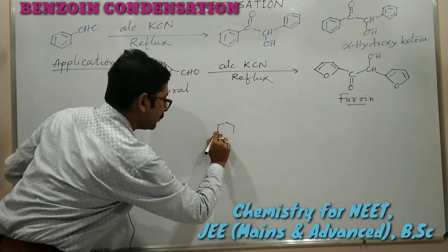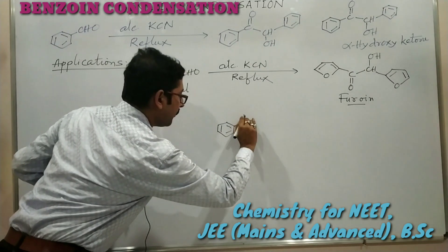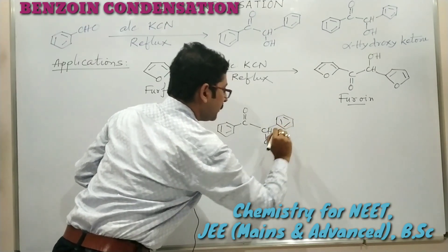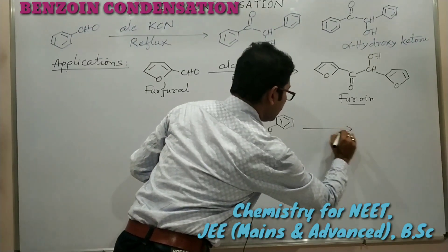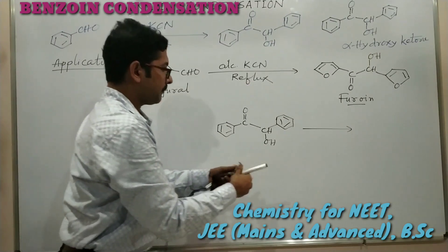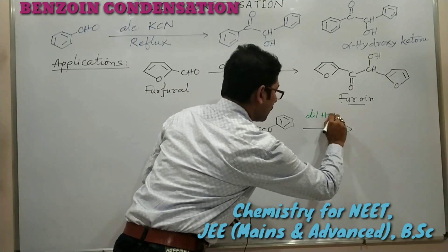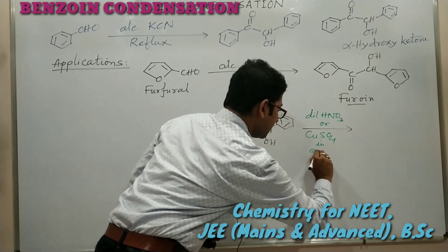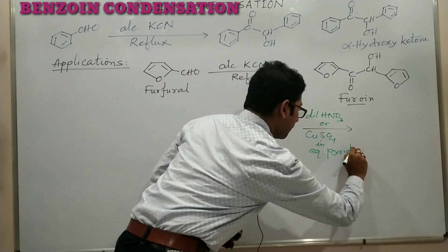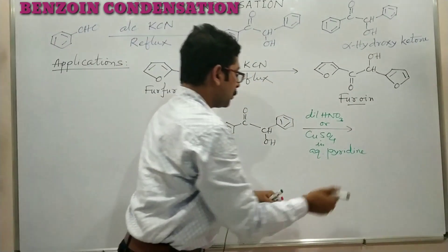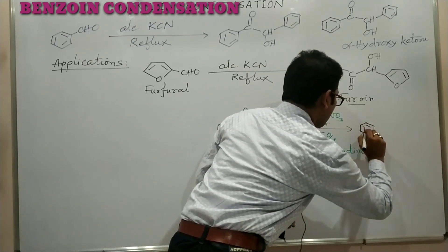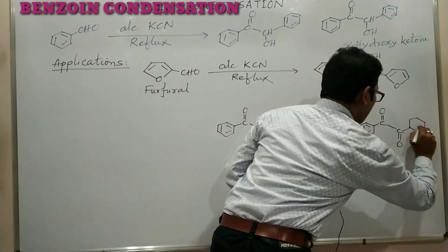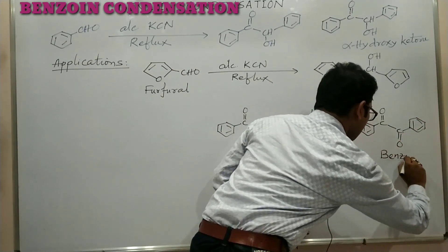From benzoin, we can prepare a variety of compounds. First, if we oxidize benzoin with dilute nitric acid or copper sulfate in aqueous pyridine, it will be oxidized to benzyl — a diketone with two phenyl groups.